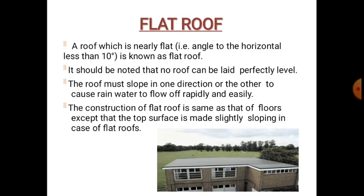As we know, a roof is the uppermost part of the building supported on any structural material and covered with any roofing material. In a flat roof, the slope is less than 10 degrees generally, meaning a flat appearance is there — hence its name is flat roof. But it should be noted that the roof has not been perfectly leveled; some slope must be provided for draining of water, causing the rainwater to flow off rapidly and easily. The construction of flat roof is the same as that of the floor, except that the top surface is made slightly sloping.